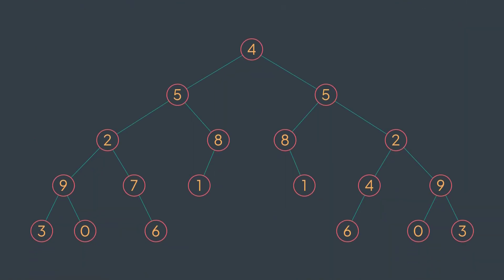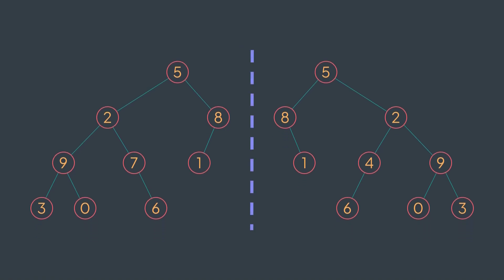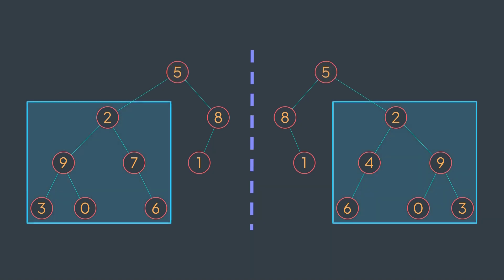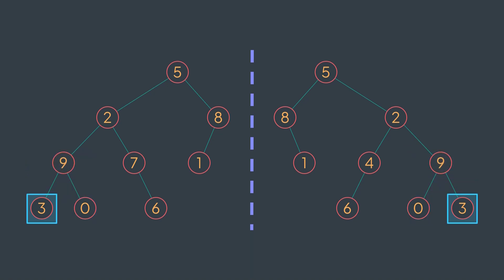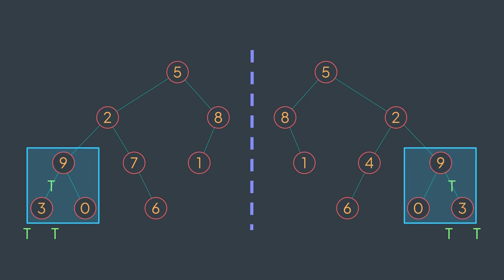Let's quickly see an example. We want to check if this tree is symmetric, so we check if its subtrees are symmetric to each other. They have the same root value, so we check the left subtree of root1 with the right subtree of root2. Same root value — we go deeper. Same root value again, we check left and right. Same root value, and their children are both null, so they return true. Same root value and symmetric children — all conditions are respected, it returns true.